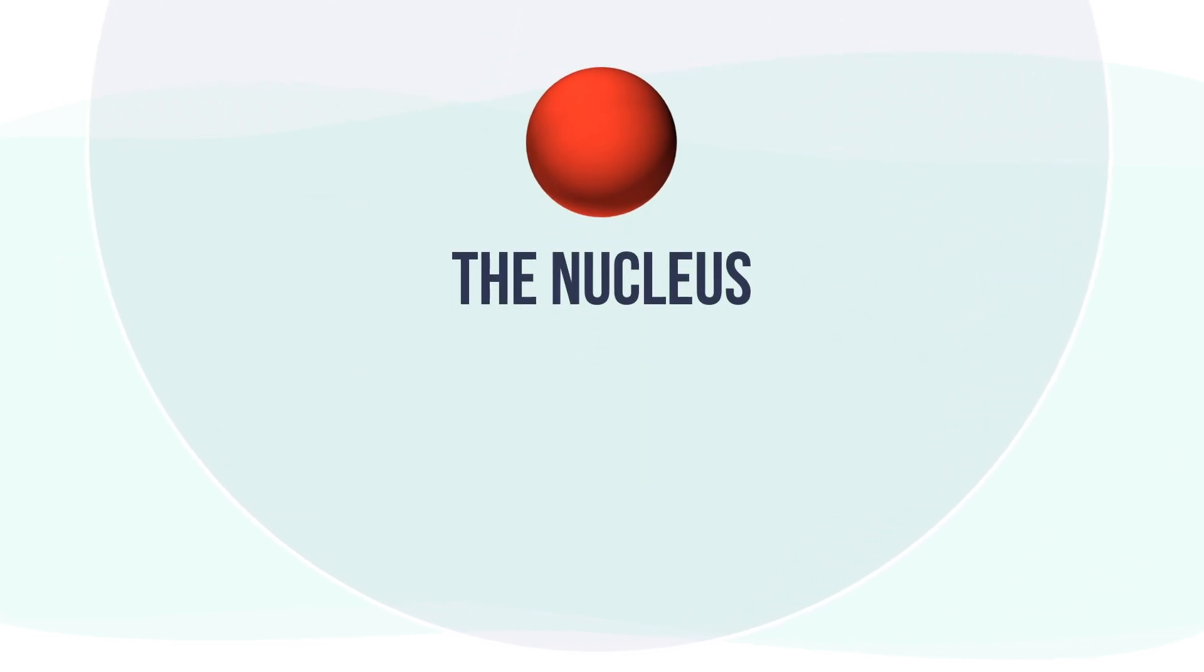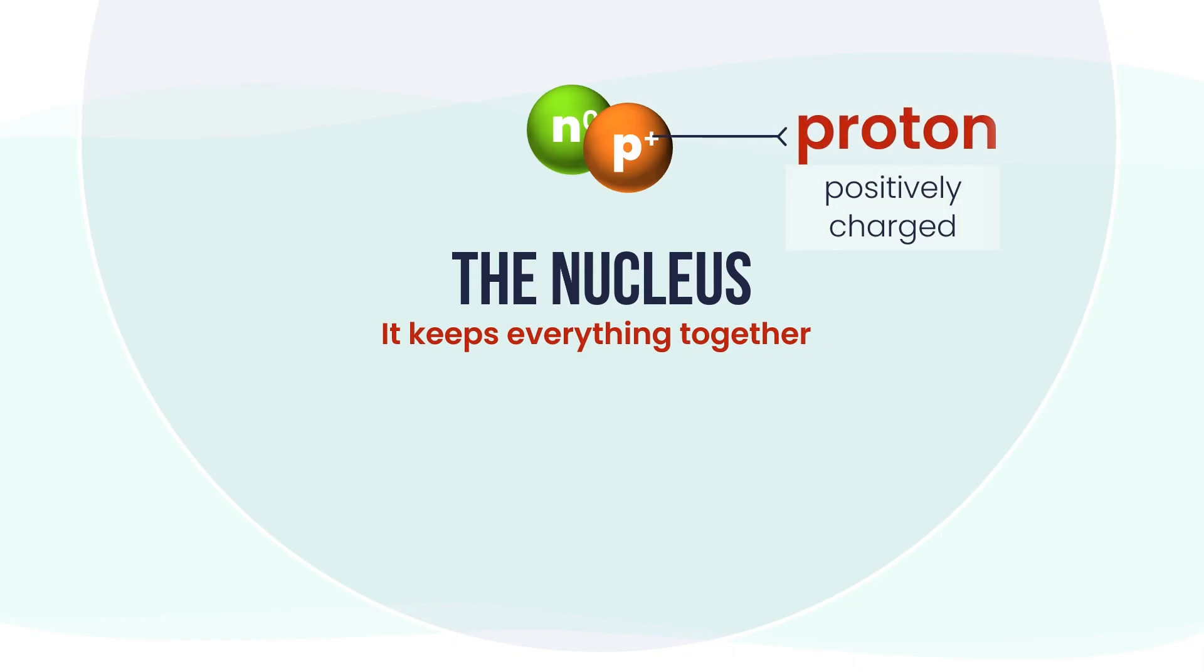The nucleus is what keeps everything in the atom together. It's where most of the atom's mass is found. Inside the nucleus, there are protons and neutrons. Protons have a positive charge. Neutrons have no charge—they are neutral. These particles are packed tightly in the center, working together to keep the atom stable.